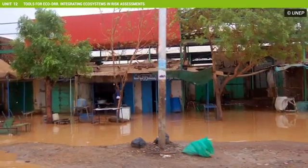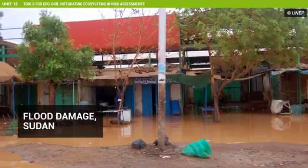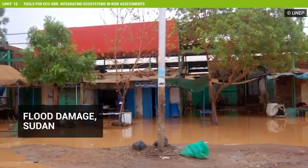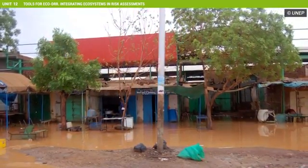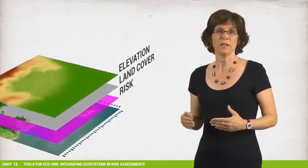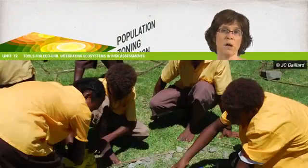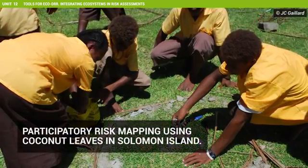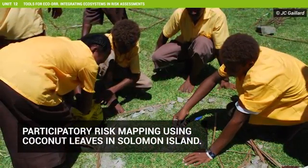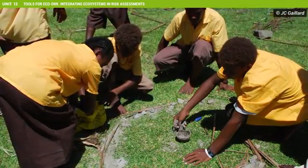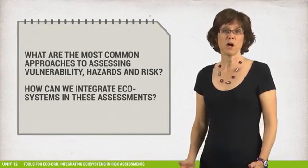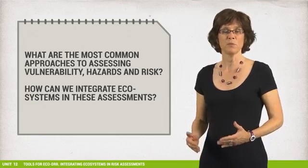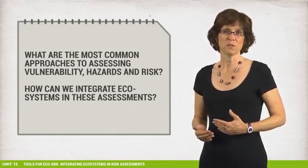One of the first steps in establishing an integrated risk management plan is to assess the risks or potential losses to a population over time. We then want to communicate these risks and take the appropriate measures to reduce them. We often communicate risk through geographic information systems or GIS maps, although there may be many other ways of communicating about immediate or pending risks depending on cultural norms, such as through oral history, songs, or street theatre.